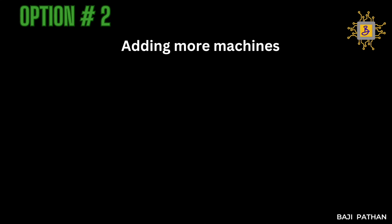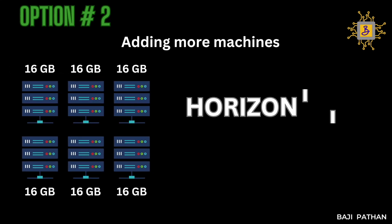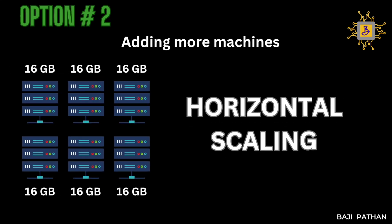The second option is adding more machines. This means connecting multiple machines to take more requests from the end users. A new set of machines will be added to the pool, and this will allow distributing the load more evenly. This is also referred to as horizontal scaling.